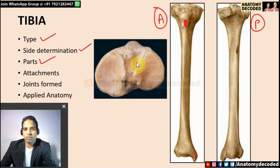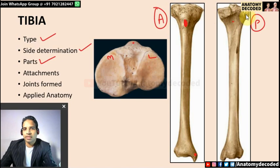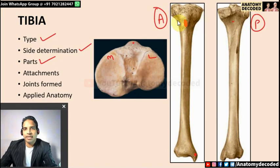Parts of the upper end of tibia: medial condyle and lateral condyle. Between the two condyles is the intercondylar area with an elevation called the intercondylar eminence. On the anterior aspect is the tibial tuberosity. On the posterior medial condyle there is a groove for semimembranosus. The lateral condyle has a flat surface for articulation with the head of fibula, and a facet on the anterior aspect for attachment of the iliotibial tract.